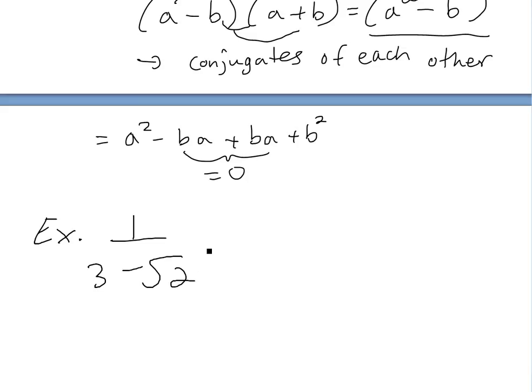But then as you can see, this is just 3 minus square root 2. Then the conjugate, if we multiply top and bottom, it's going to be 3 plus square root 2 here. It's 3 plus square root 2. So now this is just a difference of squares now.